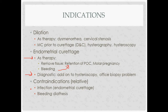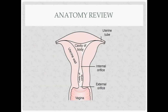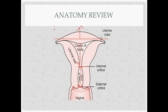In the anatomy review, there's not much that's unfamiliar. We have the vagina, the fornices of the vagina — the deepest part next to the cervix — the external os, and the internal os. If someone's talking about endocervical curettage, they mean between the internal and external os. The cavity of the body of the uterus is where you do the endometrial curettage, and above where the fallopian tubes insert is the fundus of the uterus.